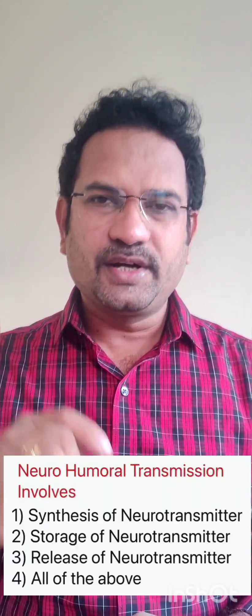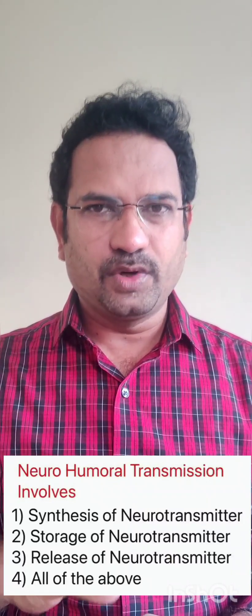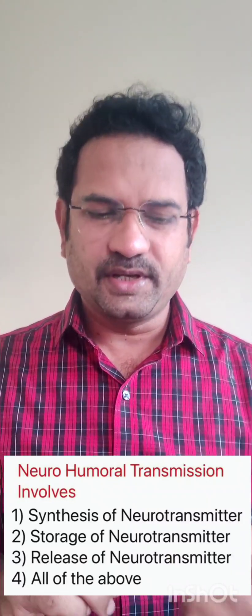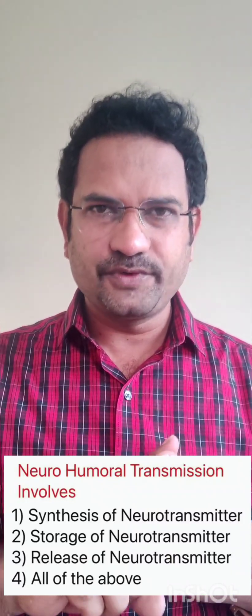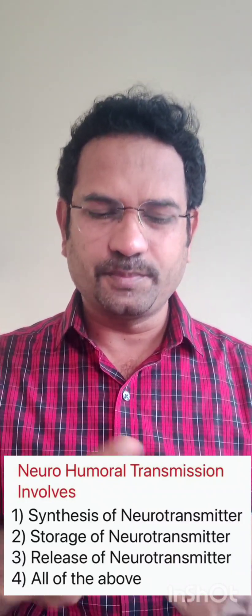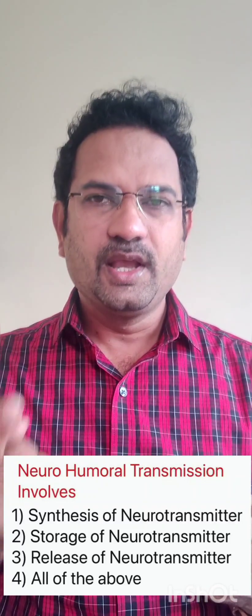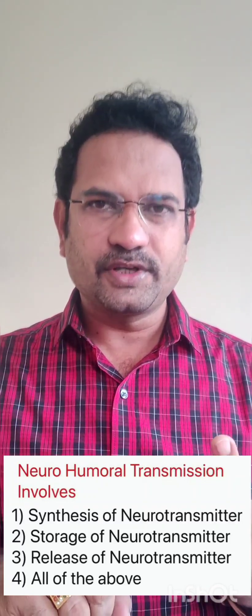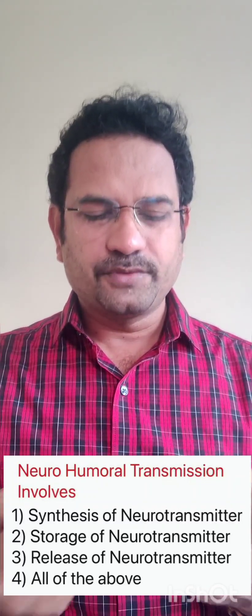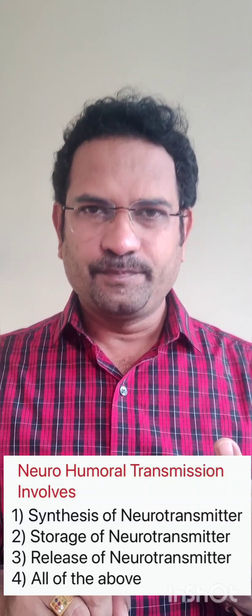Neurohumoral transmission involves: option A, synthesis of neurotransmitter; option B, storage of neurotransmitter; option C, release of neurotransmitter; option D, all of them.